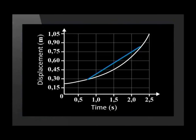But we know that instantaneous velocity — the velocity at a specific point in time — can be calculated by finding the change in displacement over a very short period of time. As we move the points closer and closer to each other, we make the time interval between the points smaller. The line becomes the tangent to the graph at a specific time. This velocity, which is given by the gradient of the tangent, is called the instantaneous velocity.